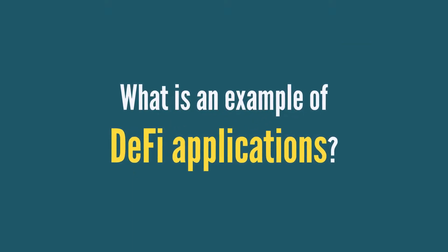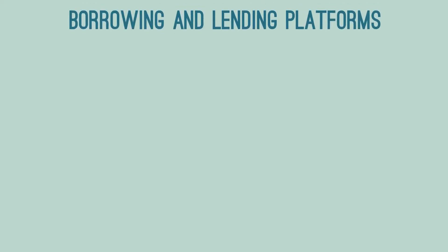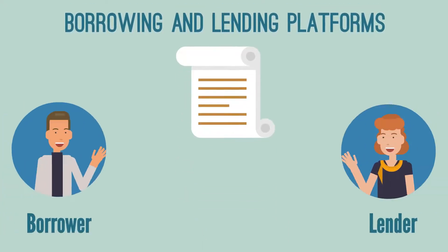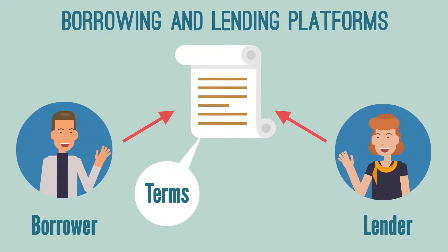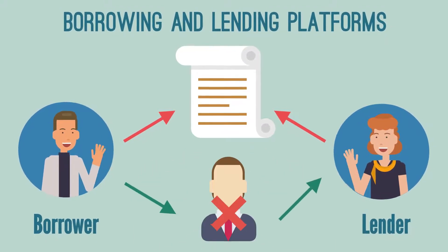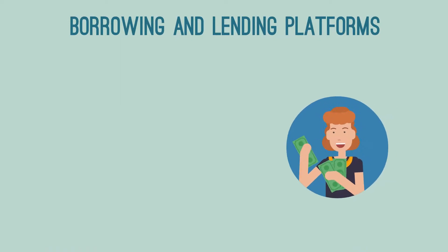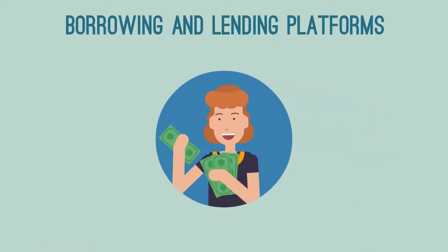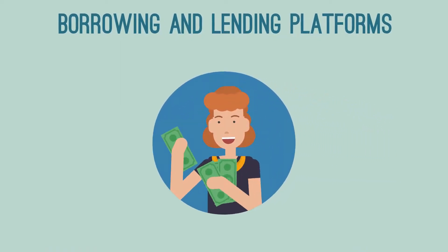What is an example of DeFi applications? Borrowing and lending platforms: smart contracts connect the lenders and borrowers, impose the terms of the loans, and issue the interest. Not requiring a third party, the platform allows lenders to earn better returns and understand the risks, thanks to the transparency blockchain provides.